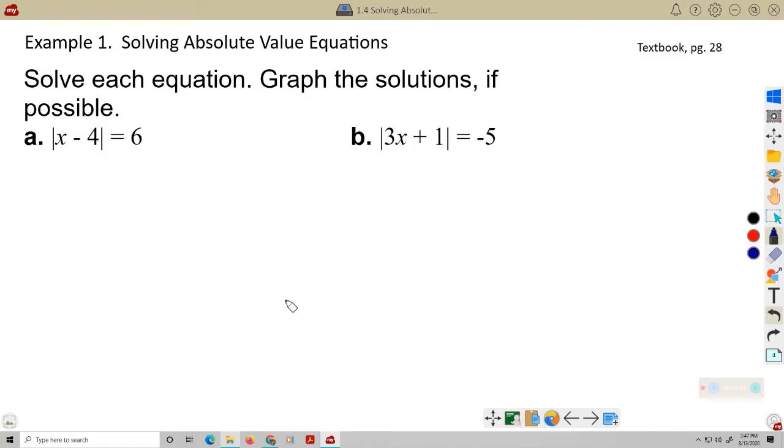Example 1A, these are on your textbook on page 28. Solve each equation, graph the solutions if possible. Absolute value of x minus 4 equals 6. That's okay, it's a positive value. So, we're going to write two cases, a positive case, x minus 4 equals 6, and then the negative case, x minus 4 equals negative 6.